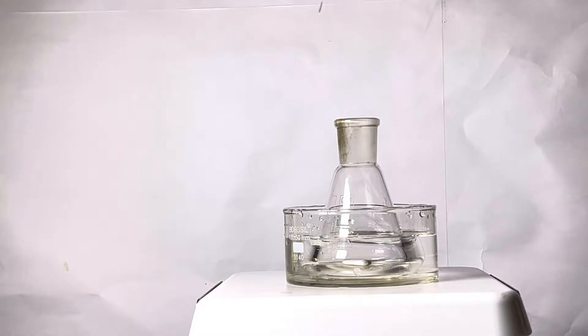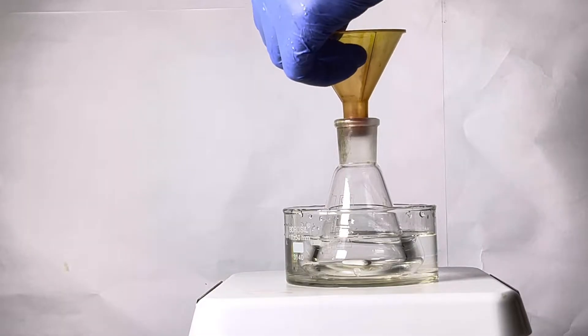A 100 milliliter Erlenmeyer flask was placed in a crystallizing dish containing water on a hot plate stirrer. A stirring bar was also placed inside.